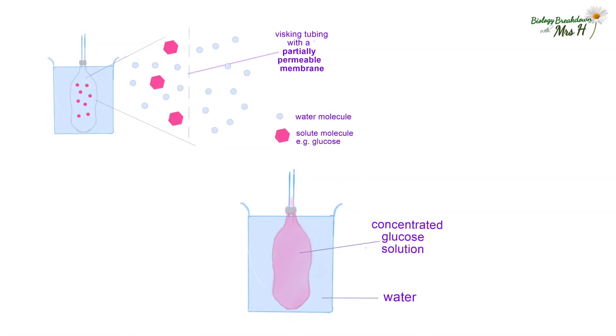Let's look at another scenario. Sometimes visking tubing is used in experiments because it is partially permeable. So you can get different kinds of questions with visking tubing. Some visking tubing contains concentrated glucose solution and it's placed in pure water.